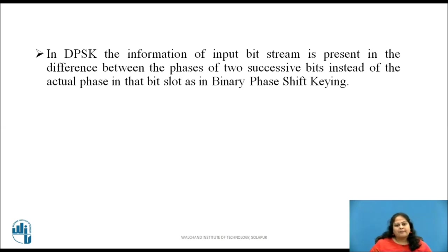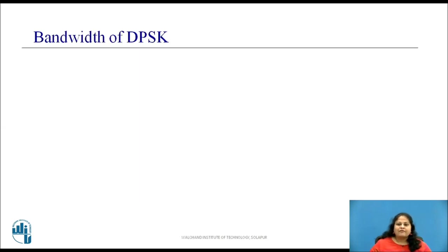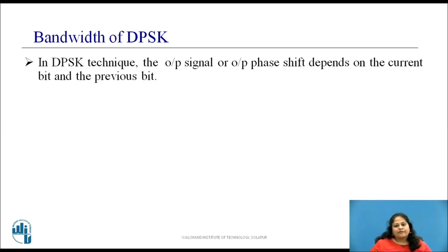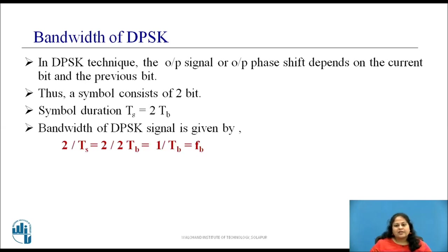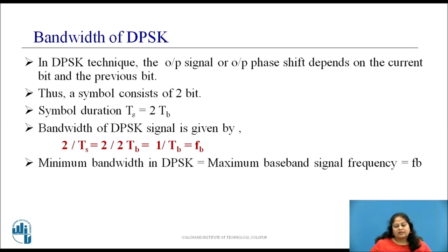This is how the DPSK signal is generated. Let us get the bandwidth of a DPSK signal. In DPSK, the output phase shift depends upon the current bit and the previous bit. Thus, a symbol consists of two bits, and the symbol duration ts is equal to 2·tb. Bandwidth is given by 2/ts, which comes to be fb. Thus, the minimum bandwidth in DPSK is equal to the maximum baseband frequency fb.